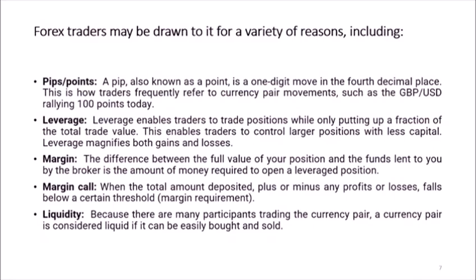Another Forex trading term is PIPs or points. A PIP, also known as a point, is a one-digit move in the fourth decimal place. This is how traders frequently refer to currency pair movements, such as GBPUSD rallying 100 points today.